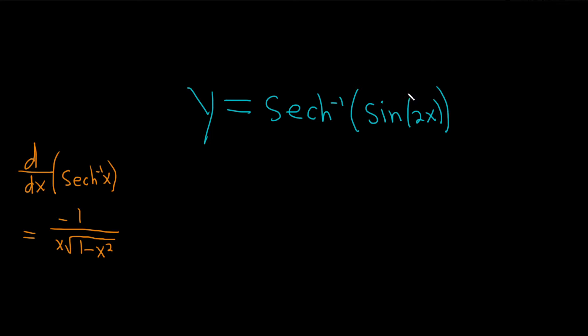So here we're going to have to use the chain rule. Our inside function will be sine of 2x. Our outside function is this inverse hyperbolic secant.